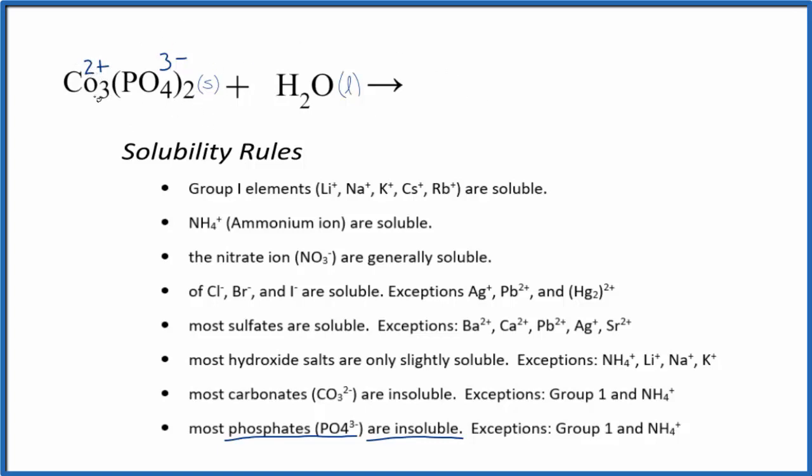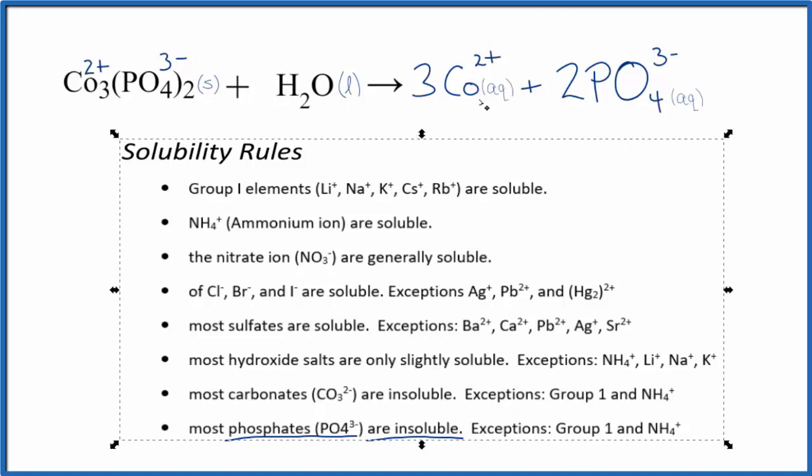So in the products, we could have three of the cobalt-2 ions, and then we could have two of our phosphate ions. Since these are dissolved in water, let's put Aq for aqueous after each one, and this would be the equation for the very small amount of cobalt-2-phosphate that dissolves in water.